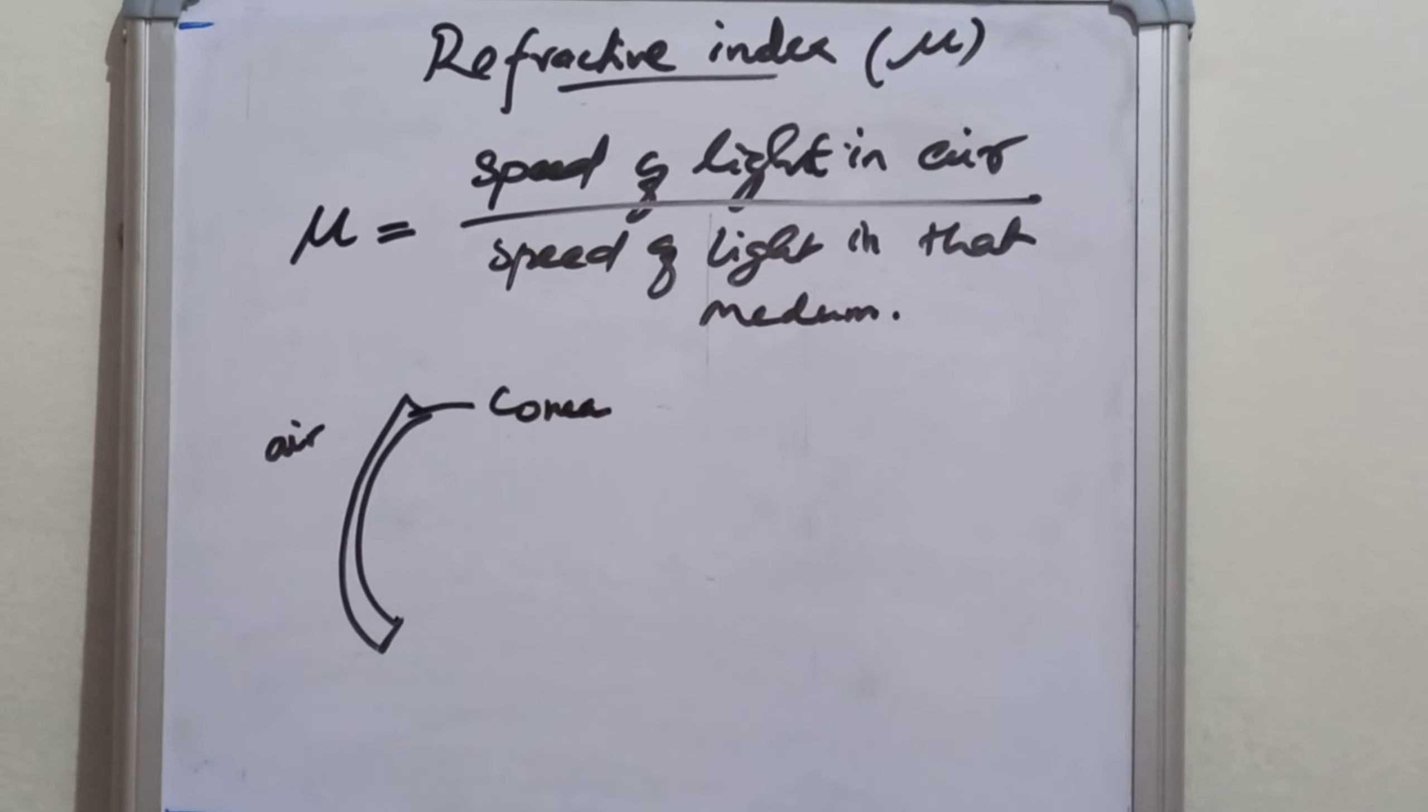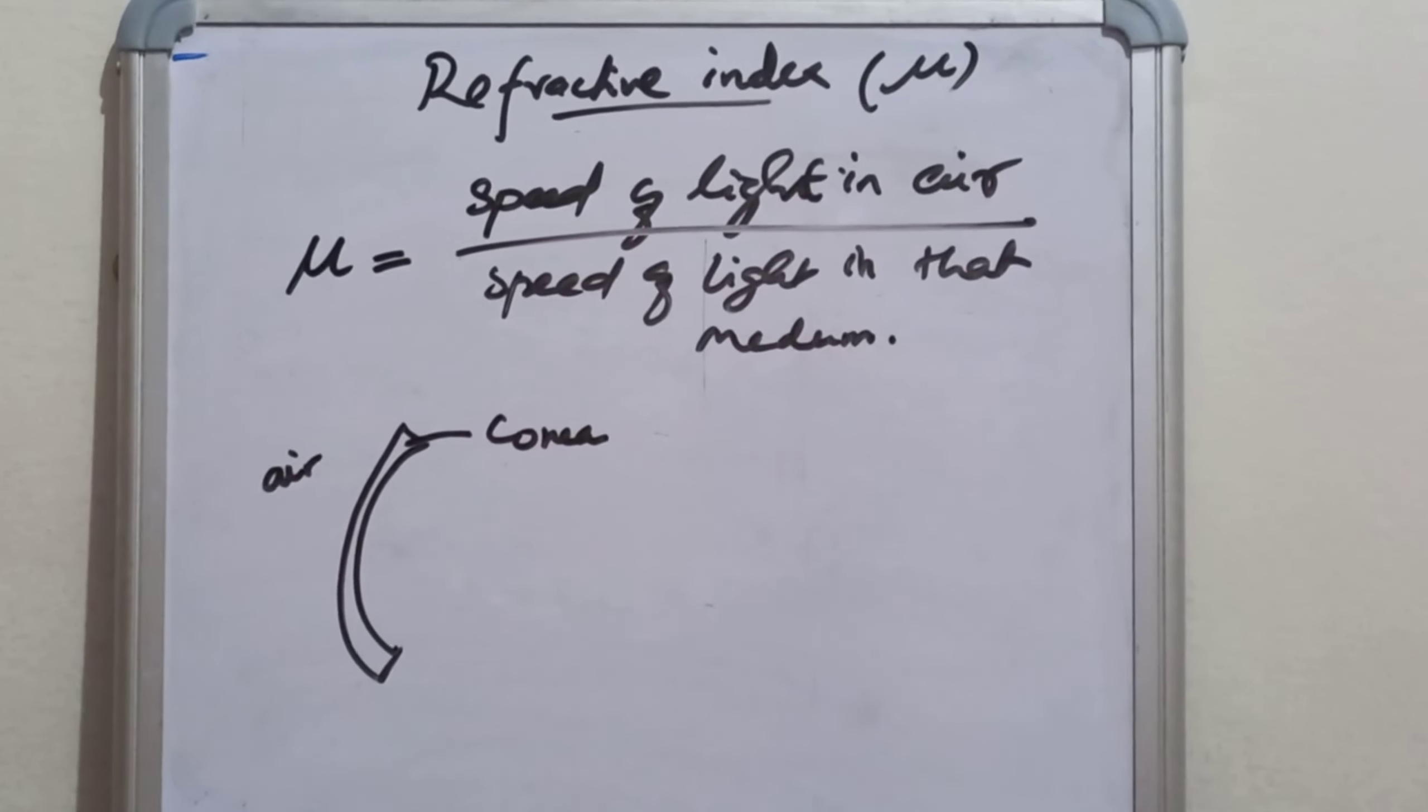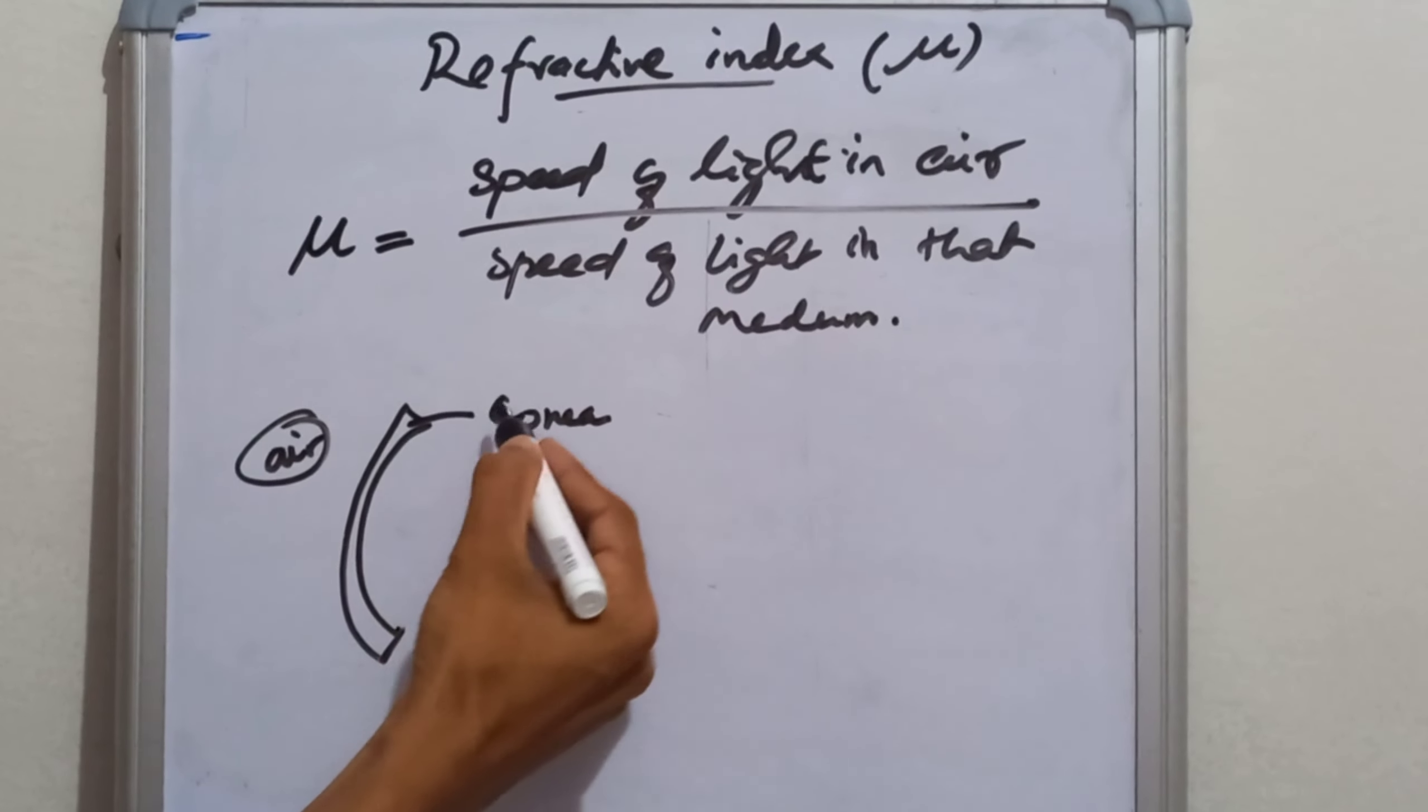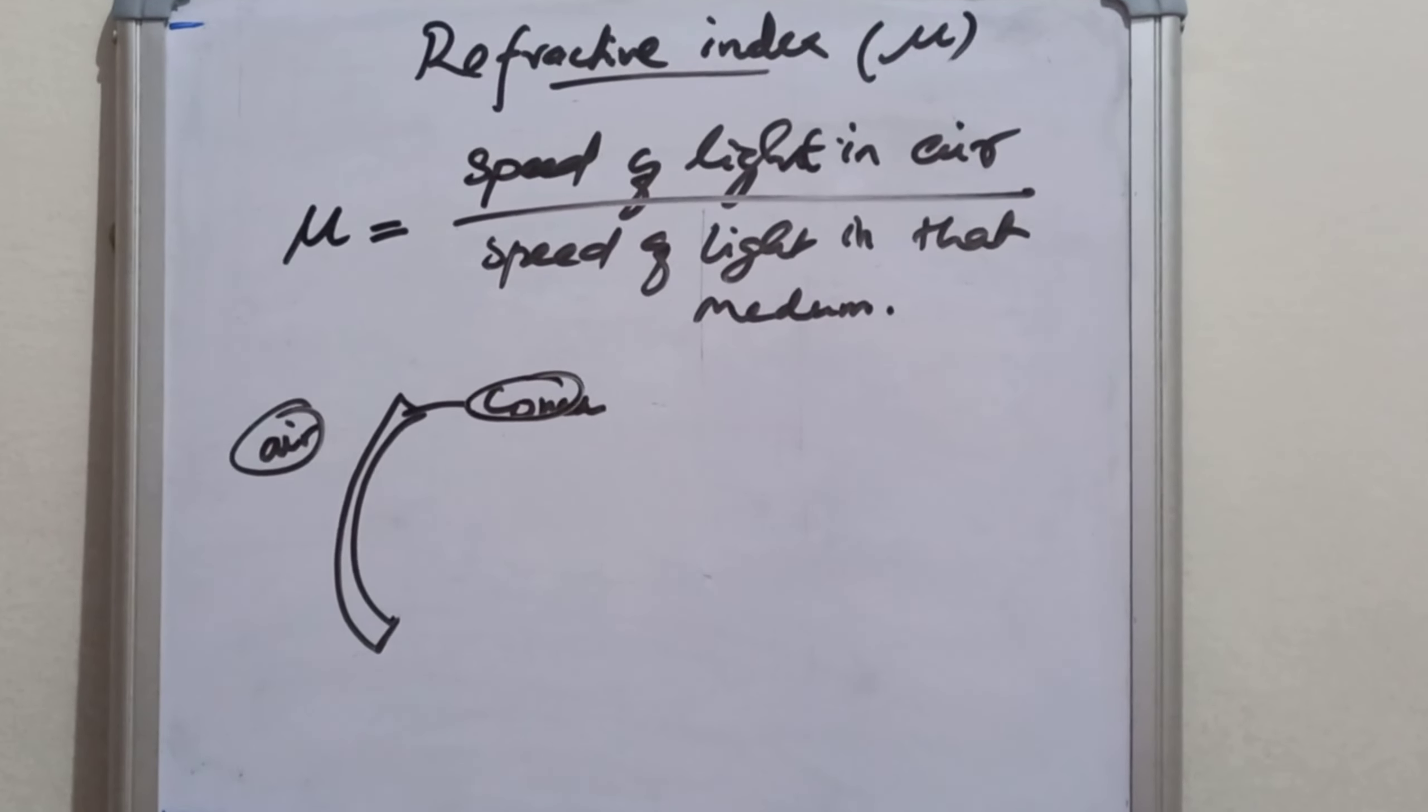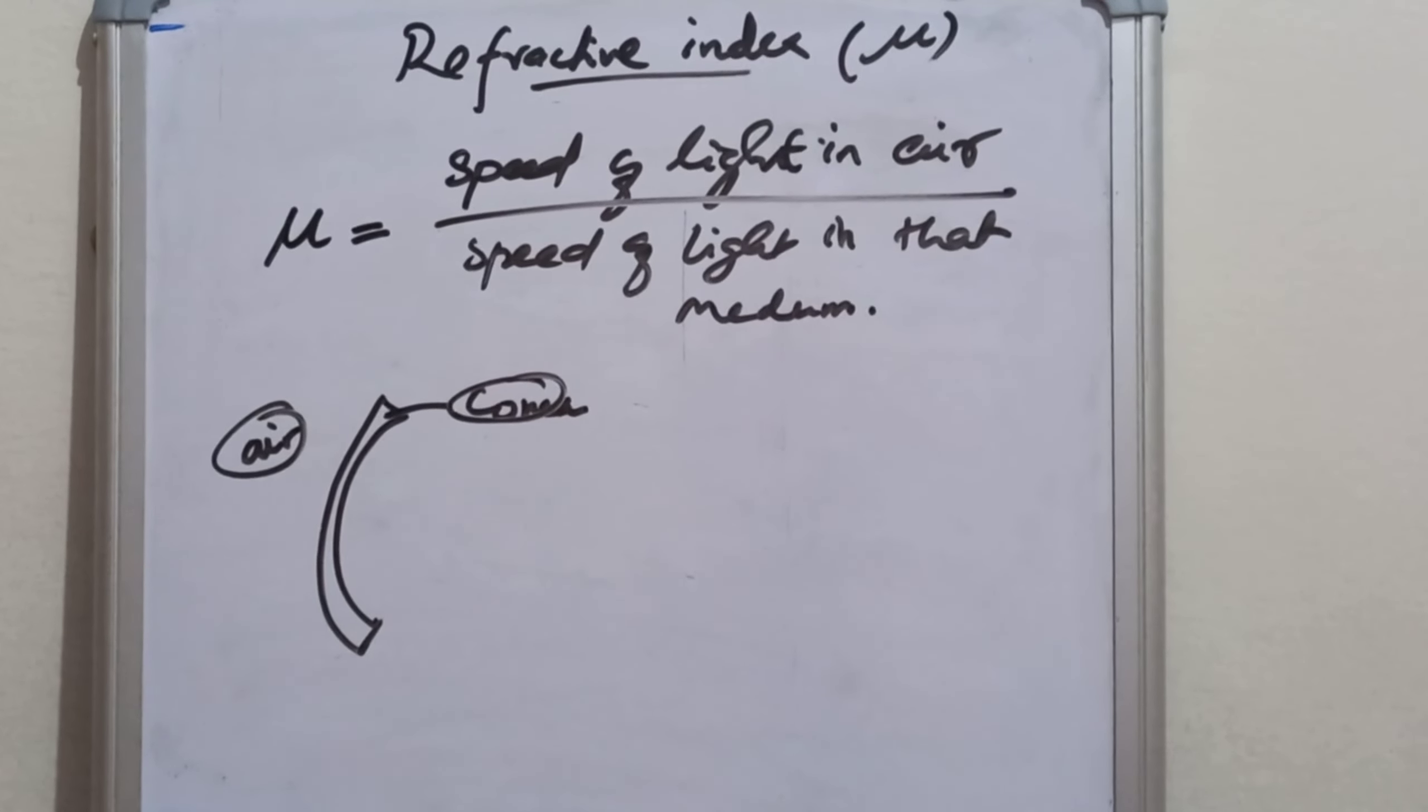The refractive index of cornea is calculated by the speed of light in the first media, that is in the air, divided by the speed of light in the cornea. Let's discuss the different ocular structures and the refractive index of that particular structure.